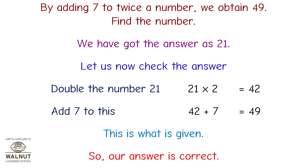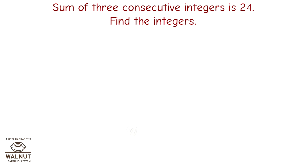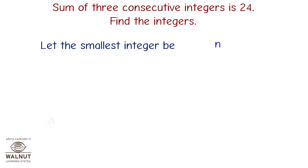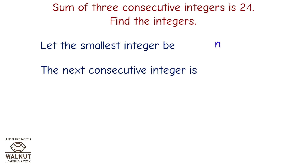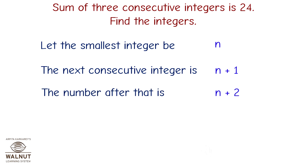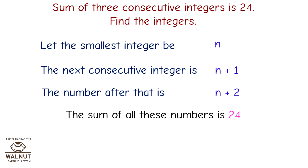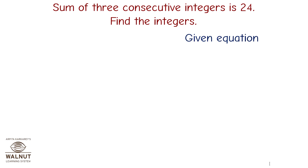Let's take a look at another word problem. The sum of three consecutive integers is 24. Find the integers. Let the smallest integer be n. The next consecutive integer is n plus 1, and the number after that is n plus 2. The sum of these numbers is 24, therefore n plus (n plus 1) plus (n plus 2) equals 24.